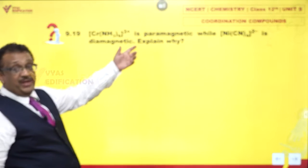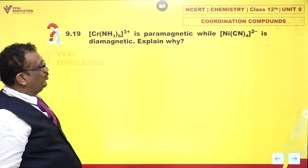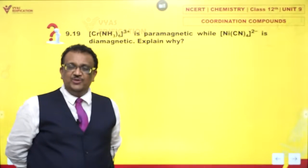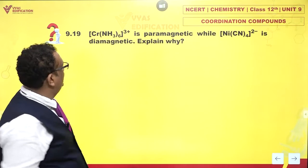[Cr(NH3)6]³⁺ is paramagnetic while [Ni(CN)4]²⁻ is diamagnetic. Why? People are asking for an explanation. Let's have it.